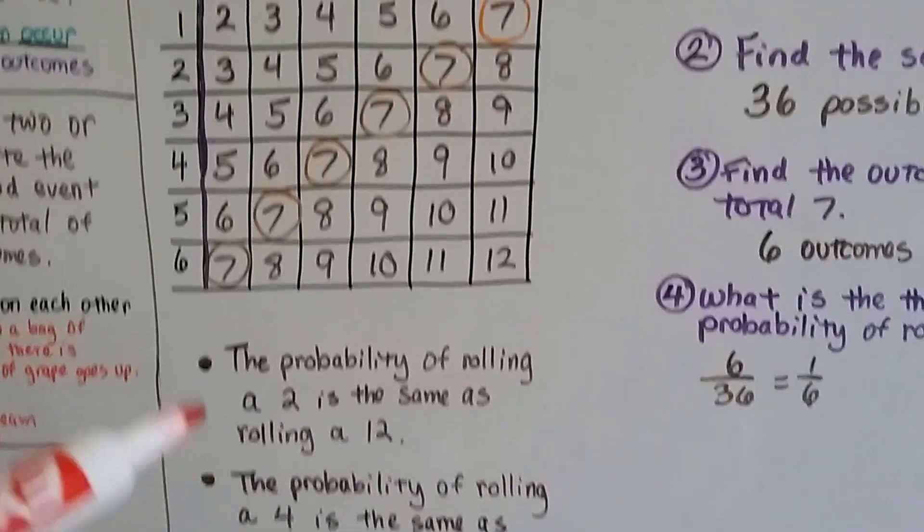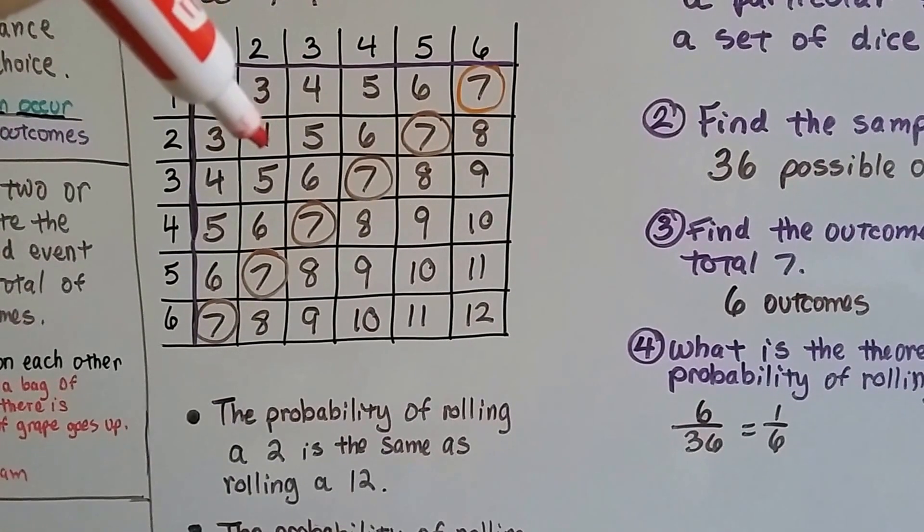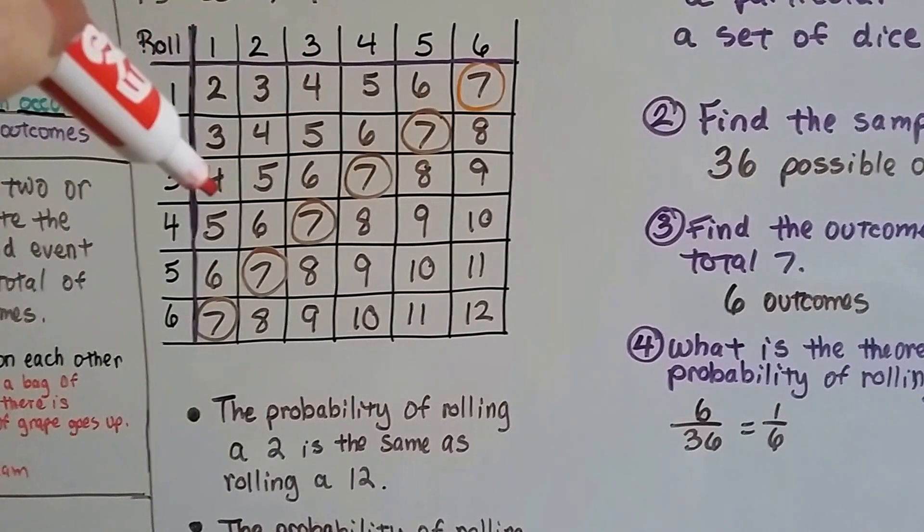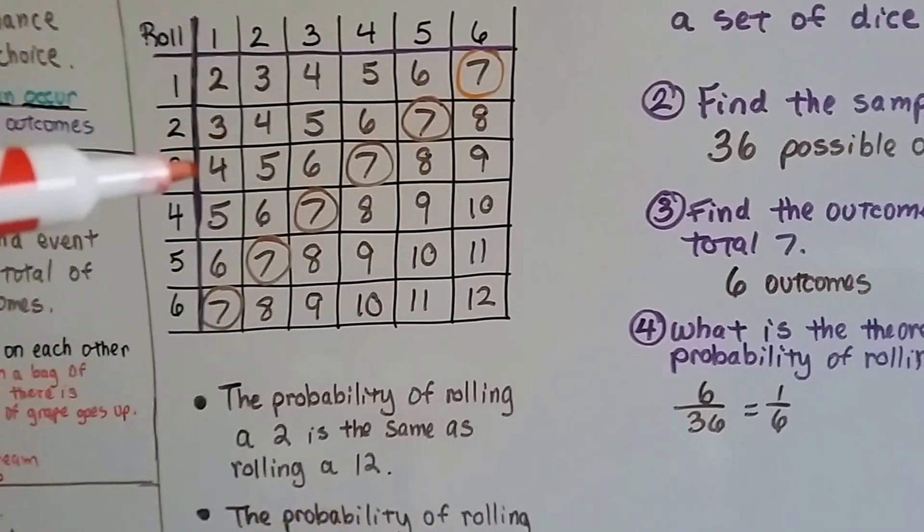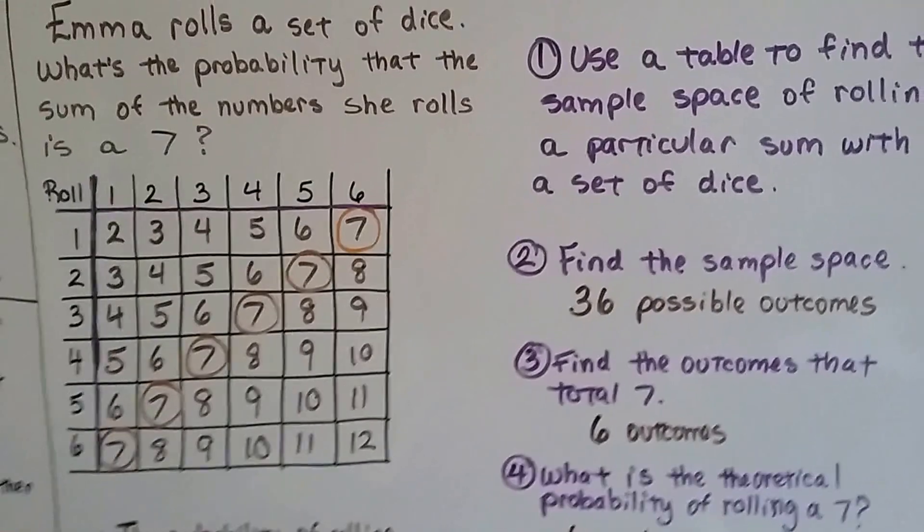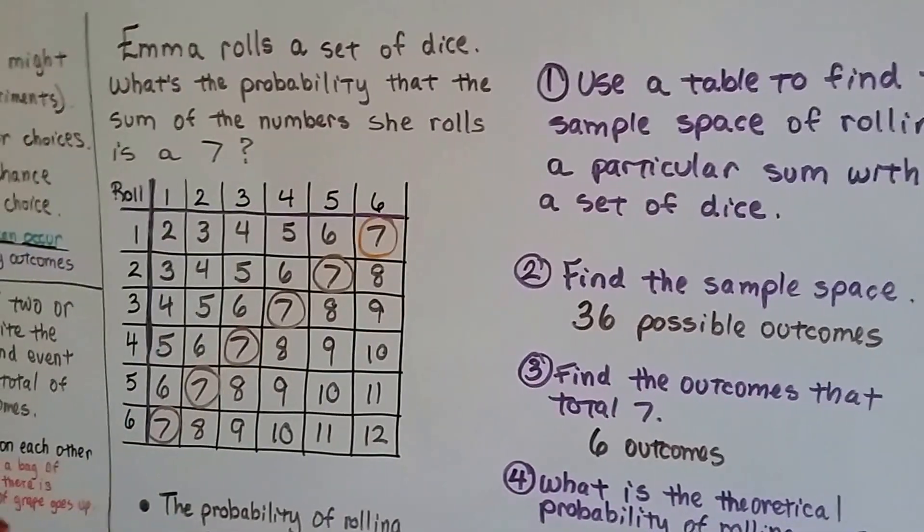Look at the probability of a 4 and a 10. We could roll a 3 and a 1 to get a 4, or a 2 and 2, or a 1 and a 3. So there's three ways that we can get a 4, and there's three ways we can get a 10. So the probability of getting a 4 or a 10 is the same.